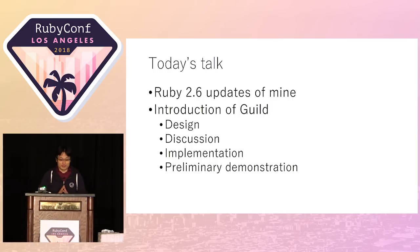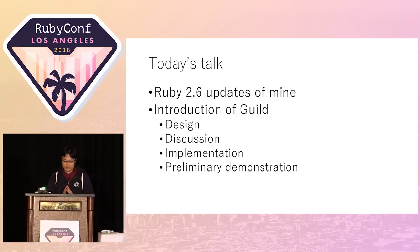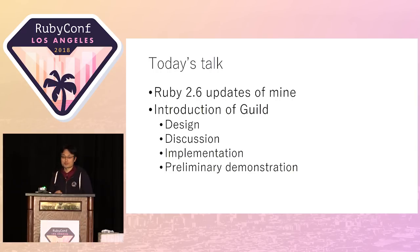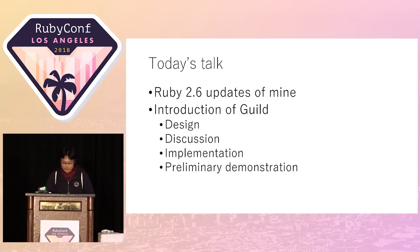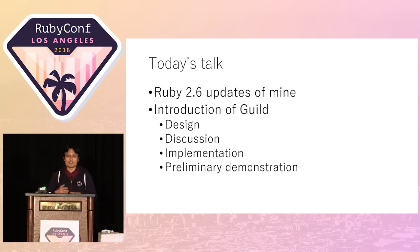Today I want to talk about these items. First I want to introduce Ruby 2.6 performance improvement — not about instruction sequence, but about some contributions of mine. And I'll introduce the main topic: Guild. I've proposed the Guild idea at RubyConf 2016, and I want to share the current Guild progress.